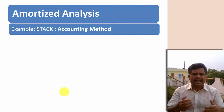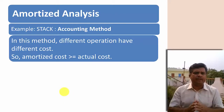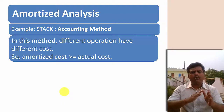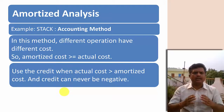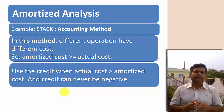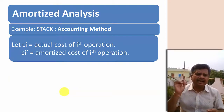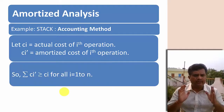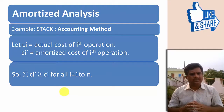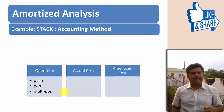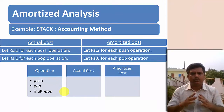Now let us understand the accounting method for the stack data structure. In this method, different operations have different costs. The amortized cost is always greater than or equal to the actual cost when credit is accumulated. When actual cost is greater than amortized cost, the credit can never go negative. Let ci be the actual cost and ci' the amortized cost of the ith operation — the summation of ci' is always greater than or equal to ci.